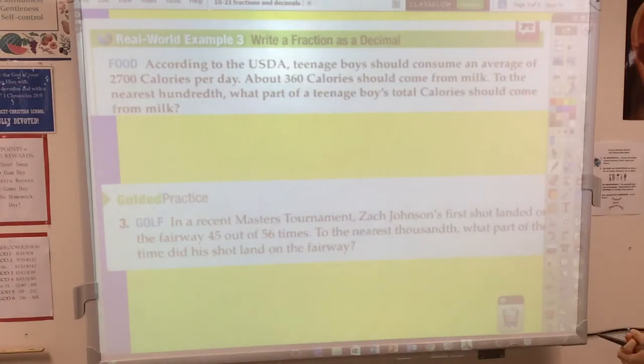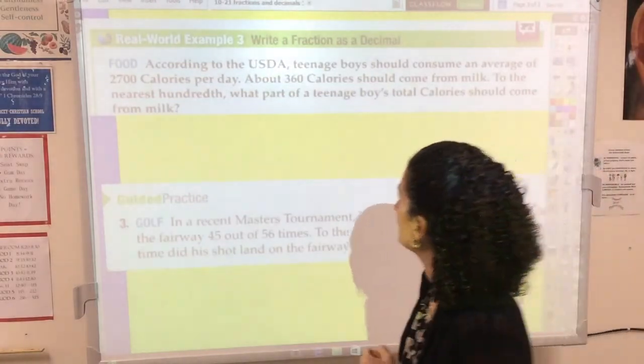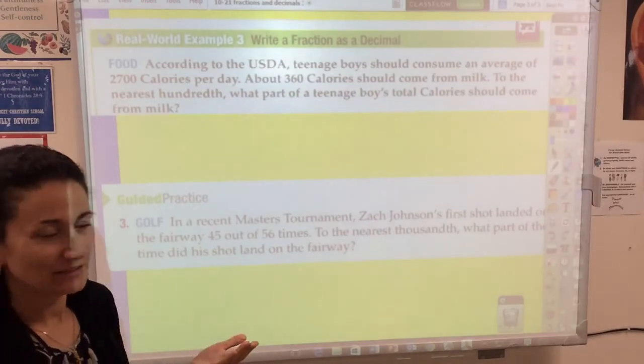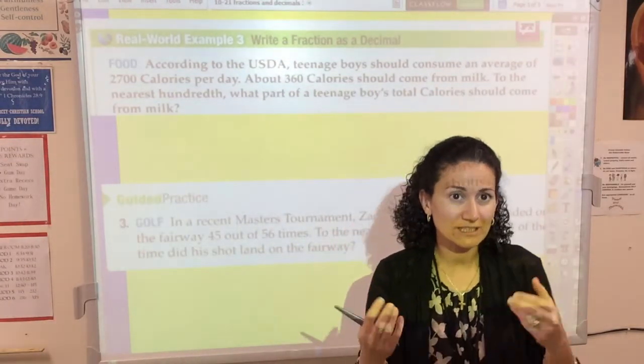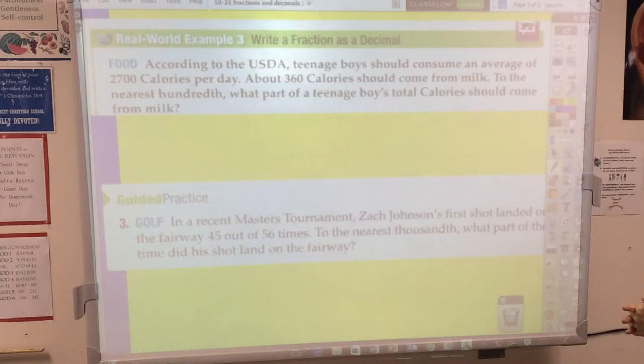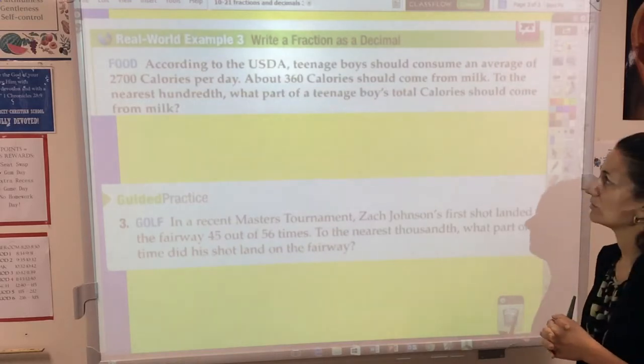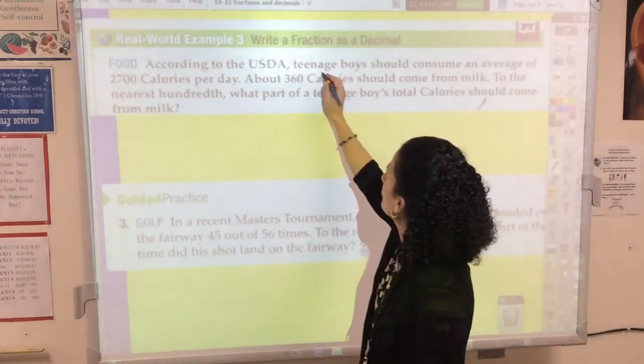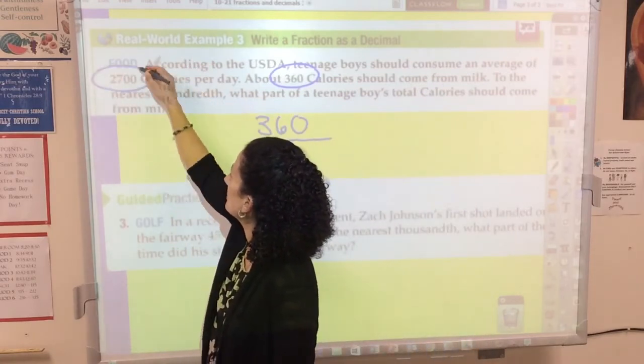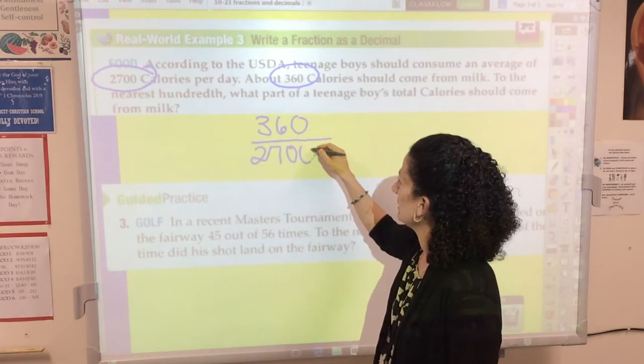Look at this first food example here. According to the USDA, the U.S. Department of Agriculture, teenage boys should consume an average of 2,700 calories a day. That's a lot of calories for you. About 360 calories should come from milk. I think that's actually changed in recent years; it should come from protein sources. Milk is a good protein source. To the nearest hundredth, what part of a teenage boy's total calories should come from milk? So we've got 360 should come from milk, and they're supposed to consume 2,700 calories per day.